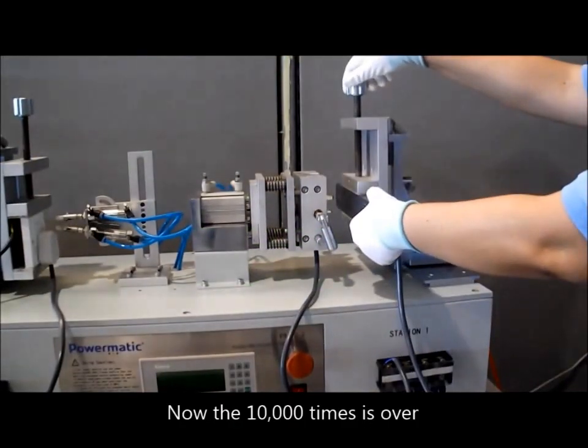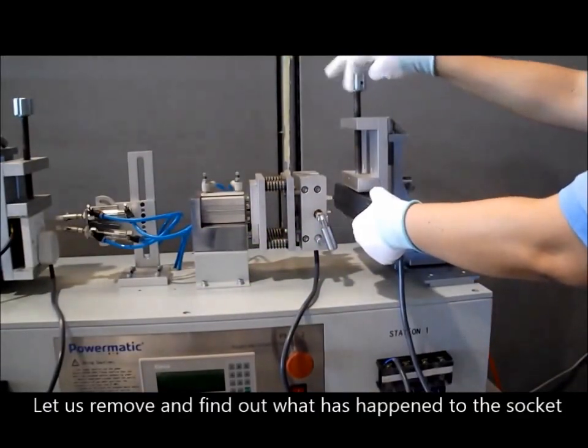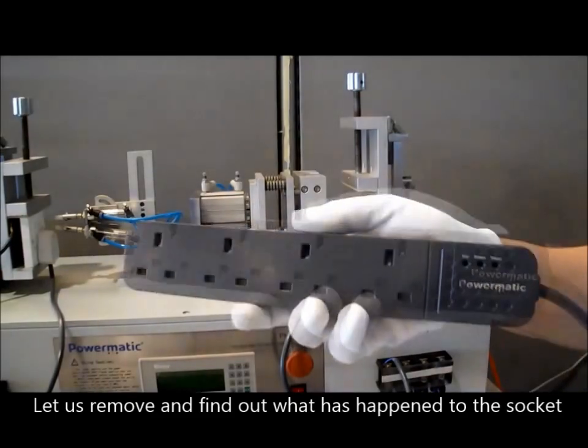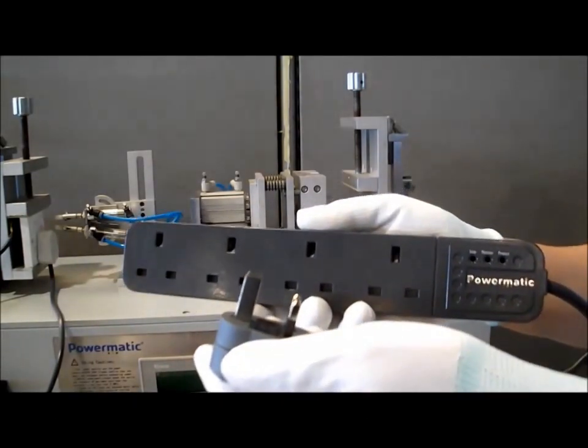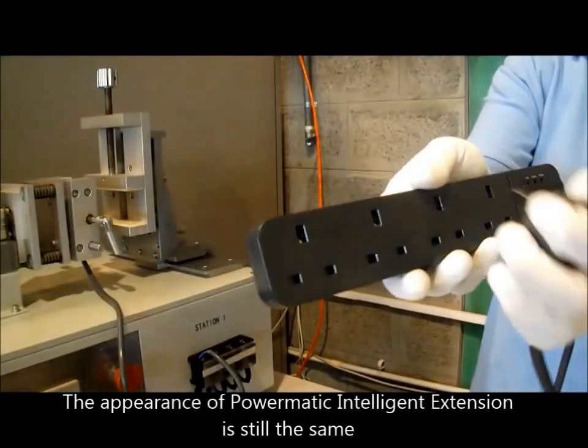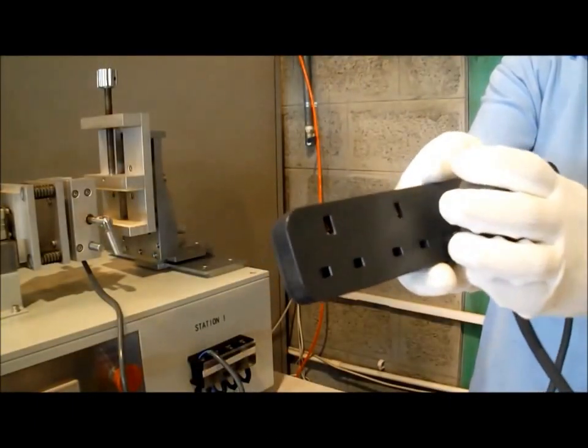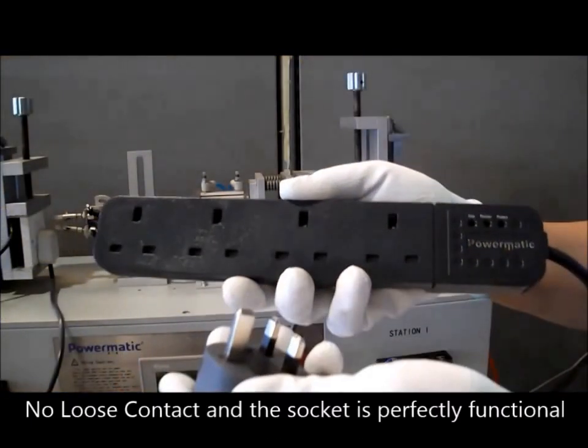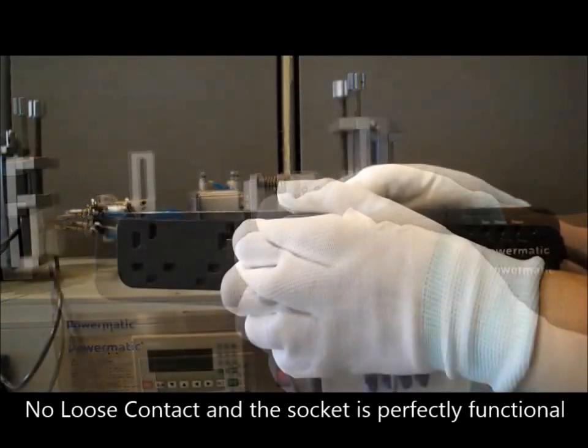Now, the 10,000 times is over. Let us remove and find out what has happened to the socket. We can see the appearance of Powermatic Intelligent Extension is still the same. There is no loose contact and the socket is perfectly functional.